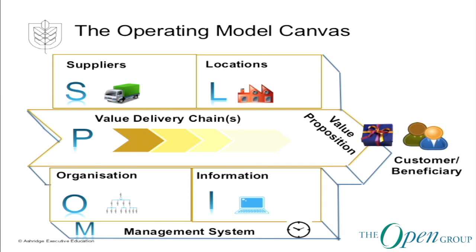The last piece is the management system, which underpins the other five. It includes the calendar of meetings needed for strategic planning, budgeting, performance appraisal and management, and continuous improvement, as well as the scorecard used to measure organisational performance. These are the six pieces that need to be aligned — aligned with strategy and with each other — to have an effective operating model.